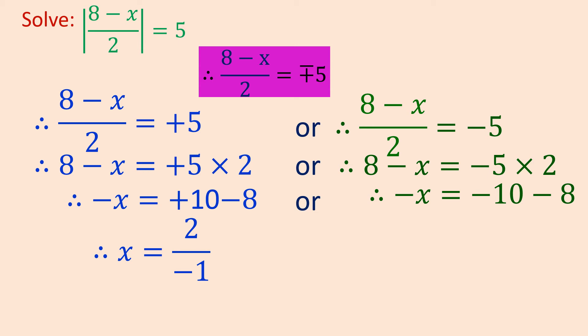Therefore, x equals to 2 upon minus 1, or the same way here, x equals to minus 18 upon minus 1, because minus 10 minus 8 becomes minus 18. Now when I further simplify, minus 1 times 1 will give you 1, and on top when I divide, it gives you minus 2.